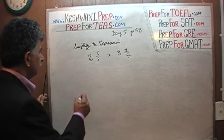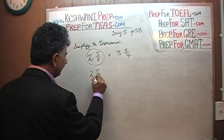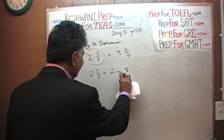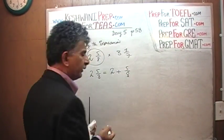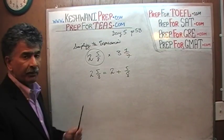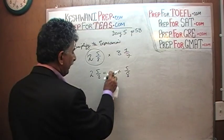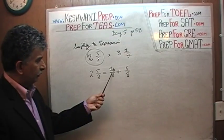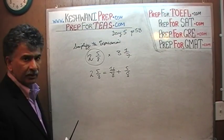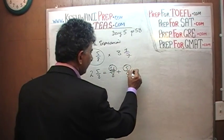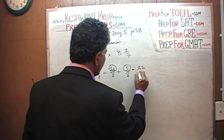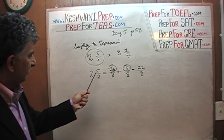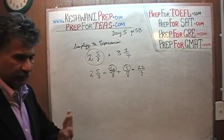Let's work on the first one. Two and 5/8 is the same as two plus 5/8. How can we write two so that it has a denominator of eight? Two can be written as 16 over 8. So we have 16 over 8 plus 5 over 8. Since they have the same denominator, we add 16 and 5, which is 21. So two and 5/8 equals 21 over 8.